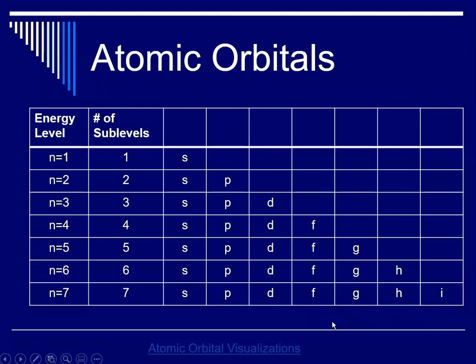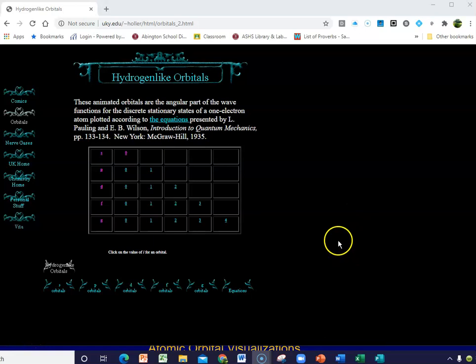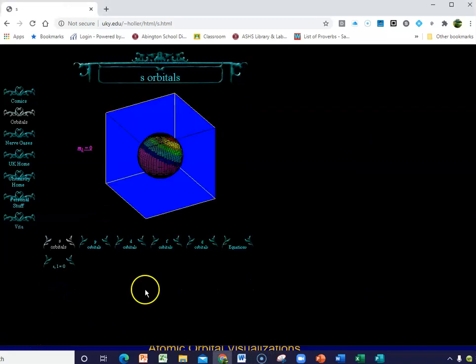So I have here an orbital visualizer. So let me open that up. This is the University of Kentucky orbital visualizer with hydrogen-like orbitals. If I click on what an S orbital looks like, the shape here is what the probability of finding an electron is. Remember that where this region is, the orbital shape, that's the region where it is 90% likely to find an electron. So the S has one orbital.